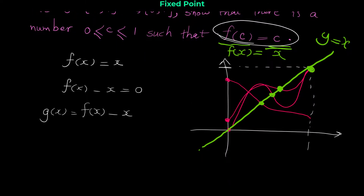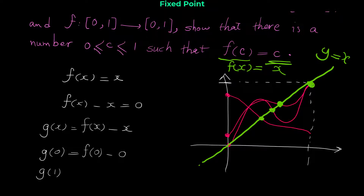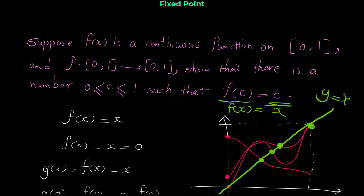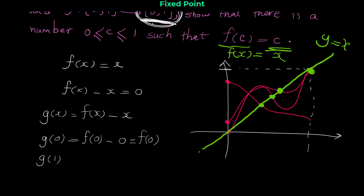Now that we have our function g, we substitute 0 and 1, since f is defined from [0,1]. In IVT we always calculate g(0) and g(1). What is g(0)? Simply plug in 0: g(0) = f(0) − 0 = f(0). From the problem, f maps [0,1] to [0,1], so f(x) is always between 0 and 1. Therefore g(0) = f(0) ≥ 0.